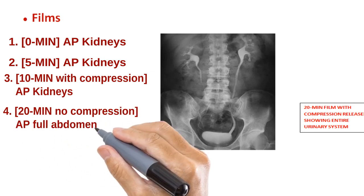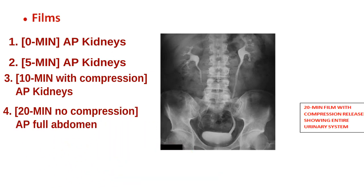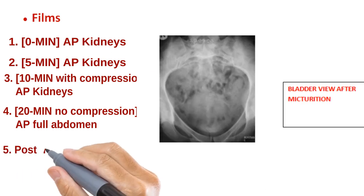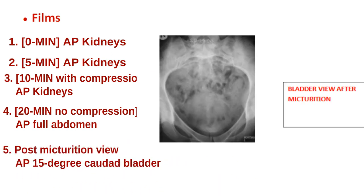After this, if compression was used, it is released, and the next image is taken 20 minutes after contrast media was injected. This image is an AP of the entire abdomen, in which the urinary system is outlined by contrast media from the kidneys to the bladder. If this image is satisfactory, the patient is asked to urinate, after which an AP 15-degree caudal angulation image of the bladder is taken, with the beam centered 5 centimeters above the pubic symphysis. This is usually the last image of the procedure.